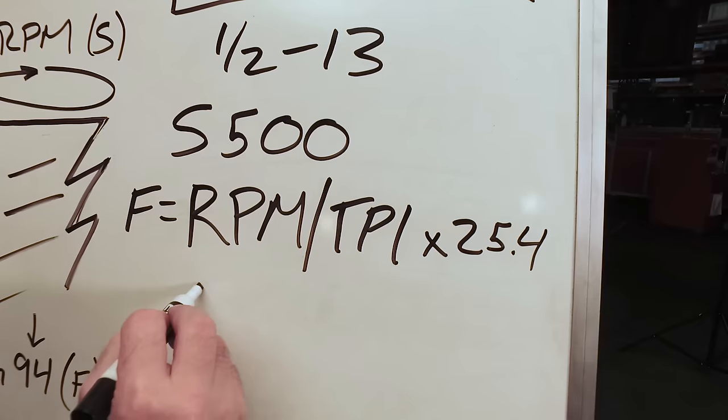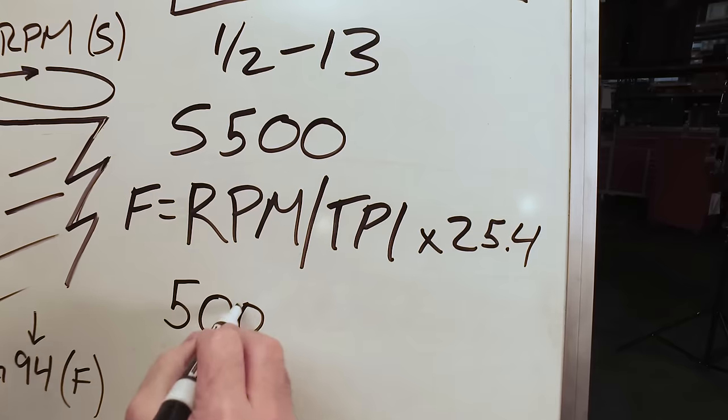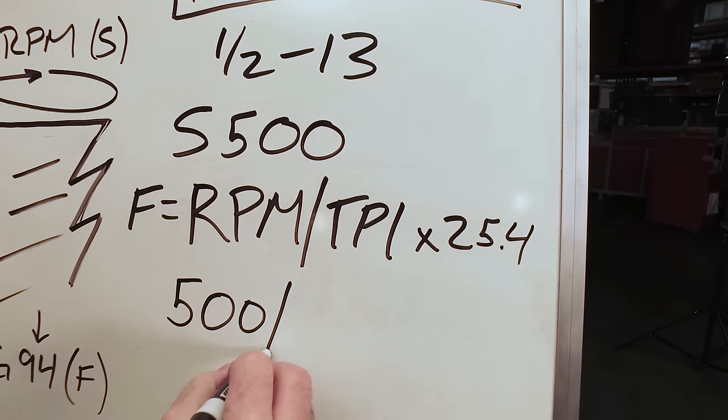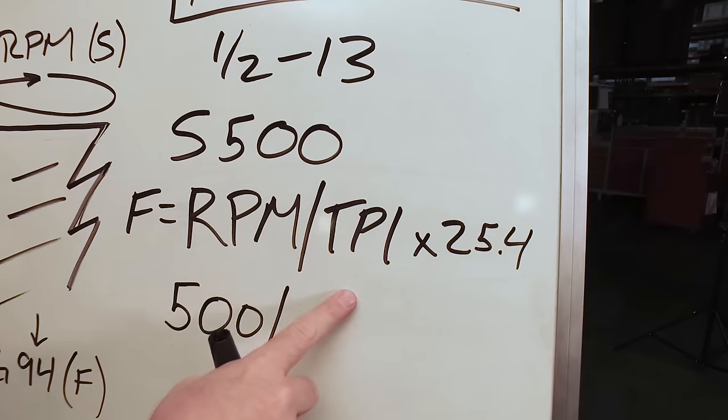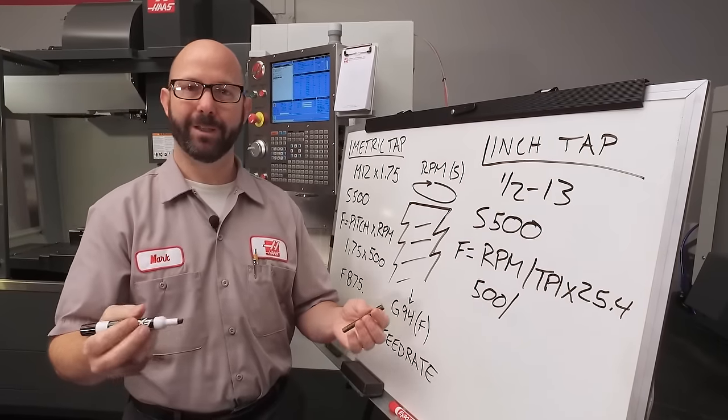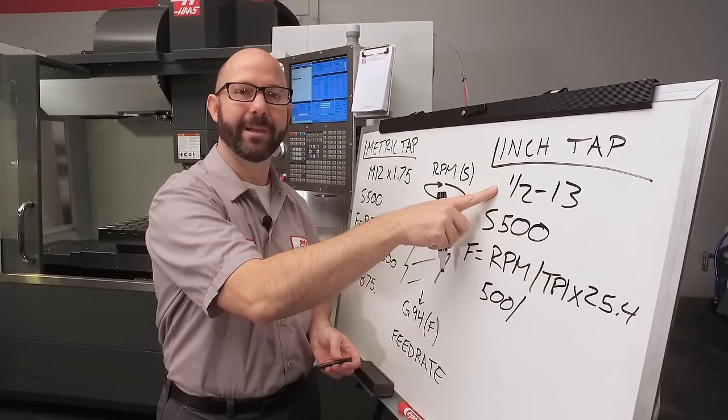Let's fill in our formula. 500 RPM divided by, but what is our TPI? Well, I'm lucky again, because it's written in the name of my tap.